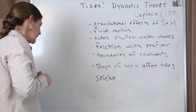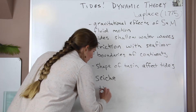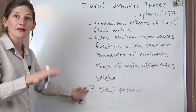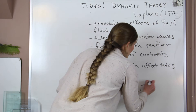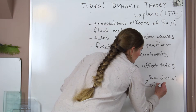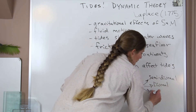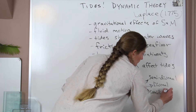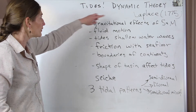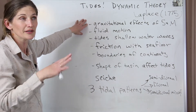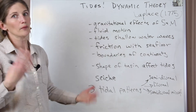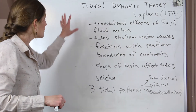This dynamic theory explains the three tidal patterns that we see — our semi-diurnal, our diurnal, and our semi-diurnal mixed tides. Basically, when we learn about equilibrium theory we expect two highs and two lows of equal size per day, but in reality there are these three different patterns, and you could get any one of them depending on where you are. This theory helps us explain that.